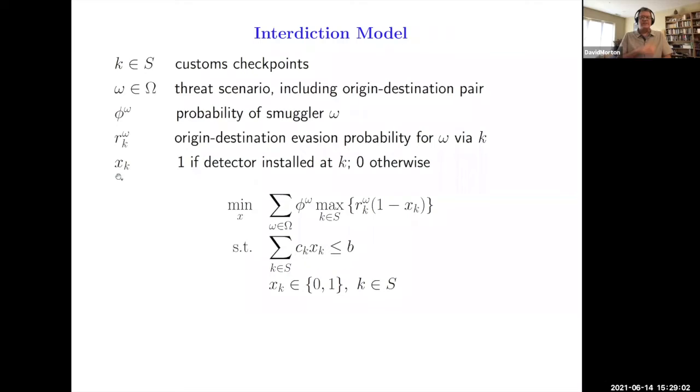Let's think about a mathematical optimization model to capture this context. We have customs checkpoints, border crossings on the Canadian and Mexican border. There's a threat scenario, which is an origin-destination pair, and then there's the probability of seeing a smuggler of type omega with that particular origin-destination pair. Let's assume that the radiation detectors are perfectly reliable; otherwise, you're just shifting things by a constant. If the radiation detectors are perfectly reliable, then if I'm a smuggler at one of those red nodes trying to go to a yellow node, I can look at all the blue nodes and say, what's the maximum reliability path that gets me to the border and through the border to my destination? That's what this R_K omega is.